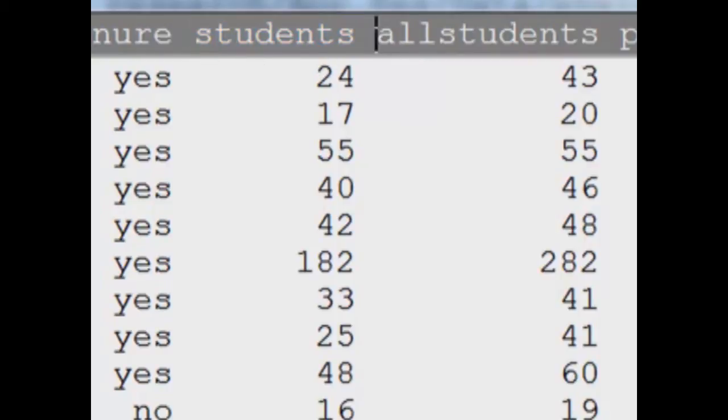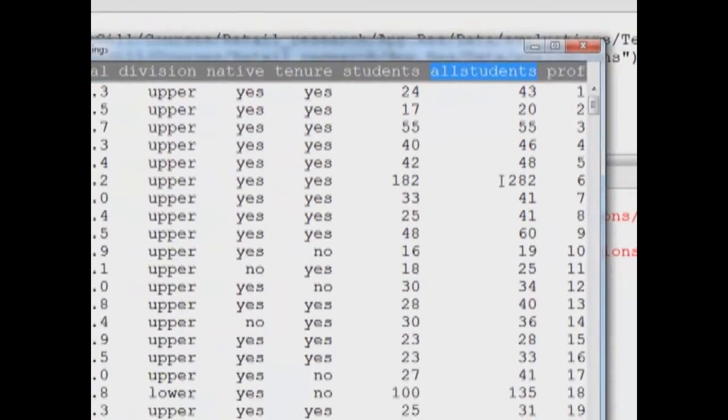Students implies how many students reported or responded to the survey, the teaching evaluation survey, and all students corresponds to how many students were there in that class.